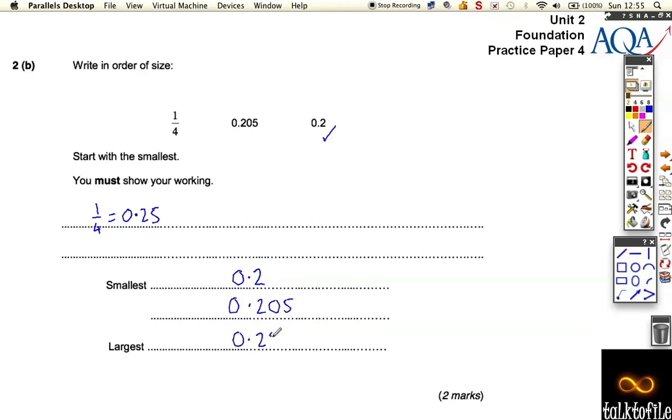And this one's 0.25, so you can see that 5 is bigger than 0. So that's the order from smallest to largest, and you could have just written a quarter at the end here. It doesn't matter which version you write down.